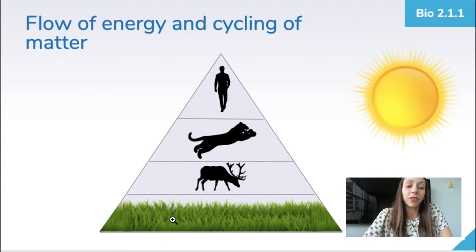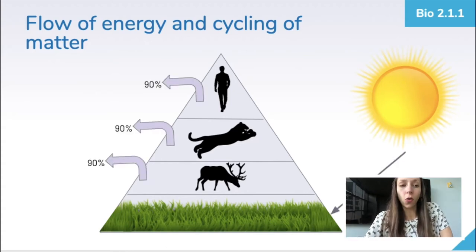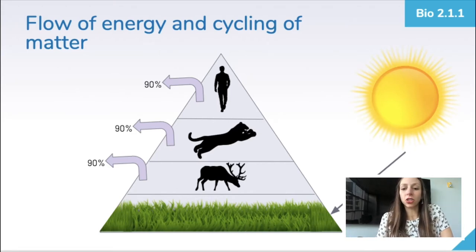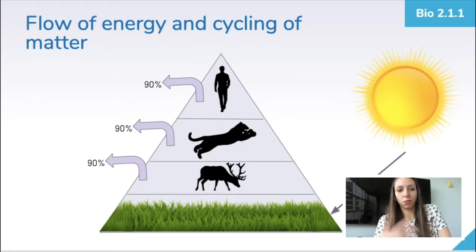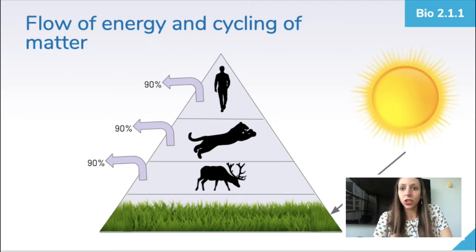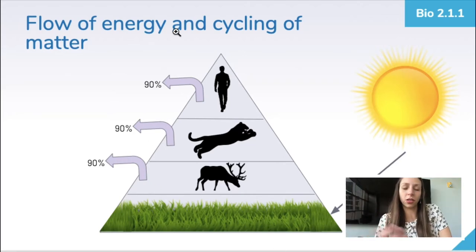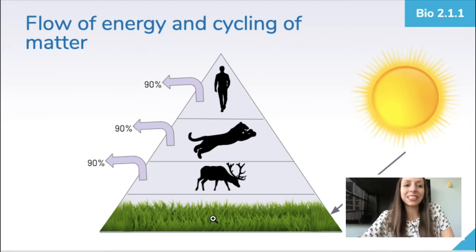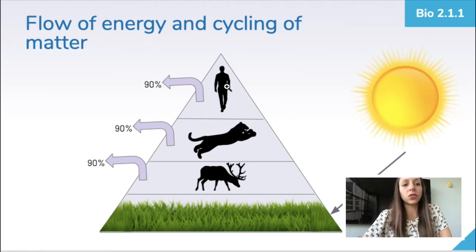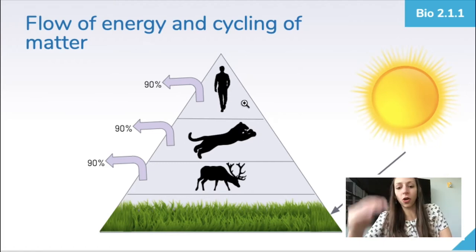After the producer level, energy is lost at each level you go up in the trophic pyramid. About 90 percent of the energy is lost as heat or other wasteful processes. Because it's not very efficient to go up in trophic levels, the highest amount of energy is found at the producer level at the bottom. The least amount of energy is at the top with our tertiary consumers, because we lose a great chunk of energy each time we go up a level.